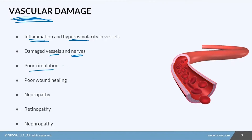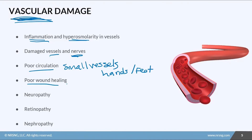Patients tend to have poor circulation, especially in the small vessels like in the hands and the feet. That poor circulation plus the inflammation is going to lead to poor wound healing — their wounds are not going to get enough blood flow or circulation, and they're going to have too much inflammation, making it difficult to heal. In nursing care, we'll talk about inspecting every inch of their skin, especially on their feet and between their toes, because even the smallest wound can become massive and infected, and they could lose their foot, their toe, even their leg because of it.